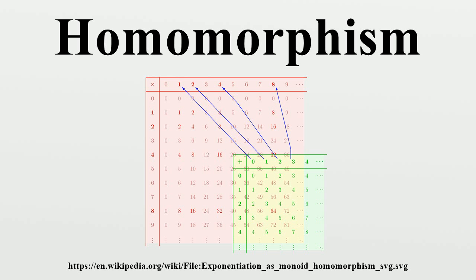Definition and illustration. A homomorphism is a map that preserves selected structure between two algebraic structures, with the structure to be preserved being given by the naming of the homomorphism. Particular definitions of homomorphism include the following.